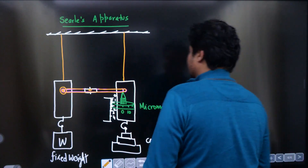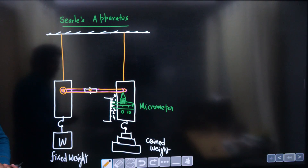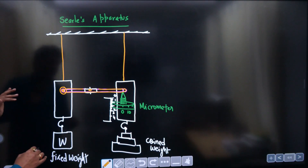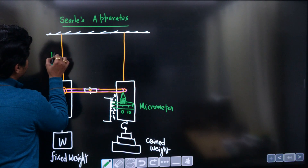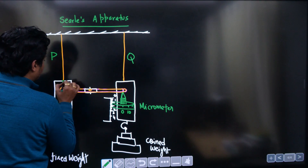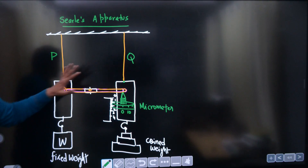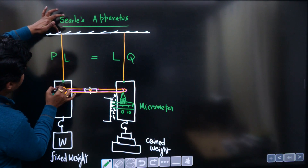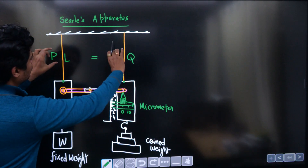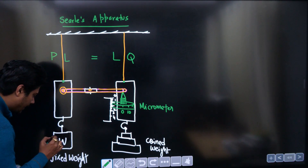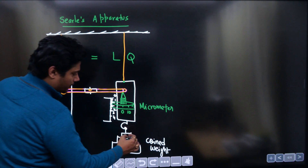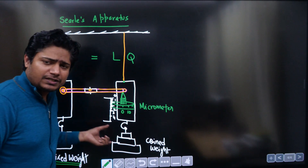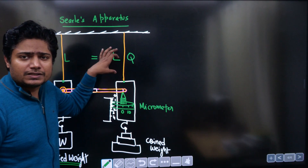Before solving problems, let's understand the Searle's apparatus. There are two wires: wire P and wire Q, both initially at the same level with the same length L. Wire P has a fixed weight attached, and wire Q has coined weights that can be changed. Each time you add half a kilogram or a kilogram, the length of wire Q changes.